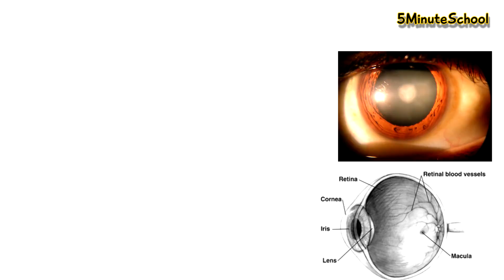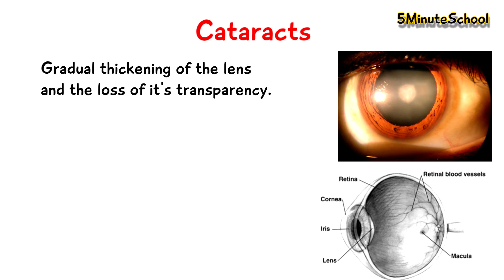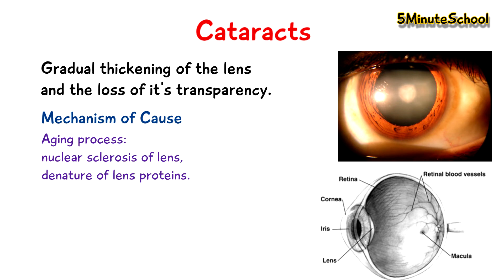Welcome to 5-Minute School and in this video we're going to be talking about cataracts. A cataract is due to the gradual thickening of the lens and the loss of its transparency. The exact mechanism of cataracts is unknown; however, with the aging process, nucleus sclerosis occurs, which is where new cortical layers are added to the lens, causing compression and hardening of the central nucleus of the lens.